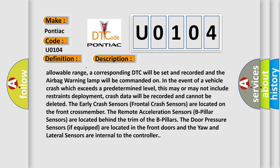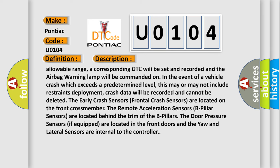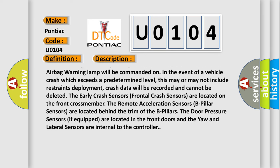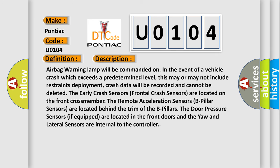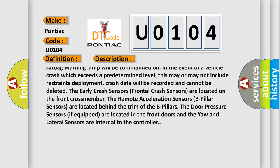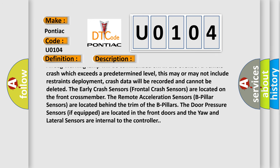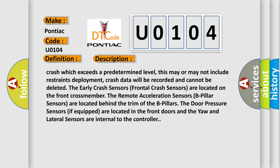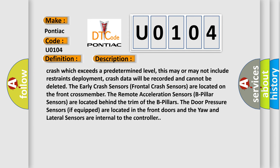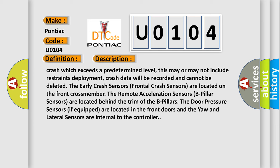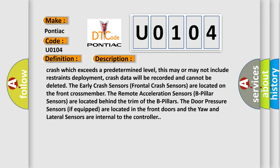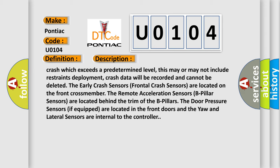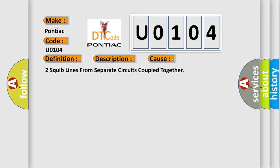In the event of a vehicle crash which exceeds a predetermined level, this may or may not include restraints deployment. Crash data will be recorded and cannot be deleted. The frontal crash sensors are located on the front crossmember. The remote acceleration sensors, or B-pillar sensors, are located behind the trim of the B-pillars. The door pressure sensors, if equipped, are located in the front doors, and the yaw and lateral sensors are internal to the controller. This diagnostic error occurs most often when two squib lines from separate circuits are coupled together.